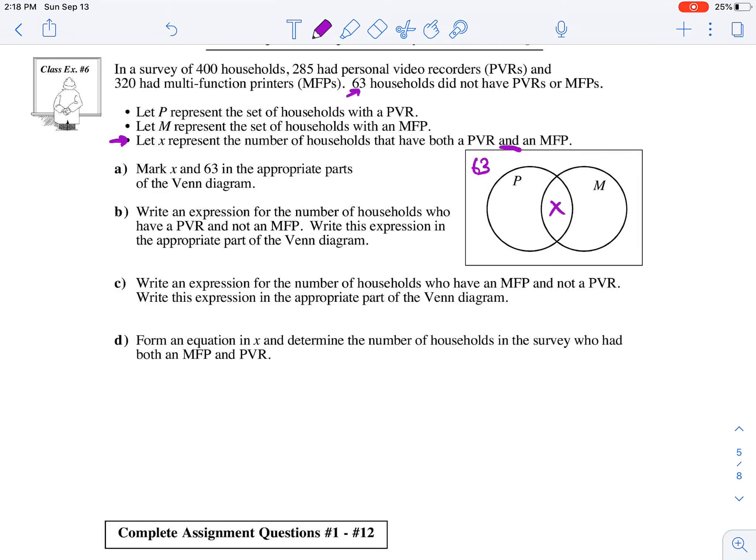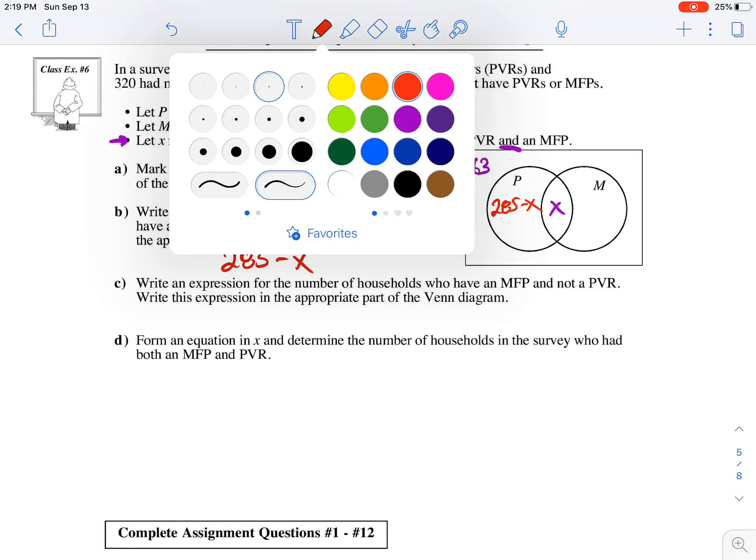Part B: Write an expression for the number of households who have a PVR and not an MFP. Well, 285 have PVRs. So if you think about PVRs, it's this region plus this region. Together, those should sum to 285, which is the same problem we ran into before. If you don't know the middle one, how do you know what goes in just this region? We don't technically know what goes in the middle, but we know enough information that we can build an expression that represents that region. It'll be 285 minus the middle. So this is 285 minus X.